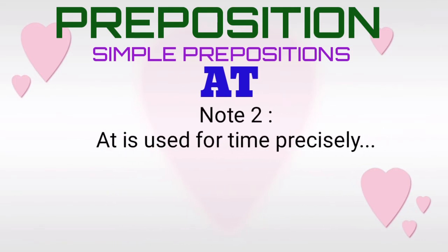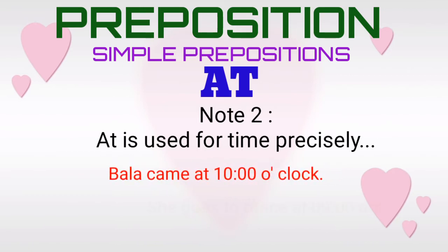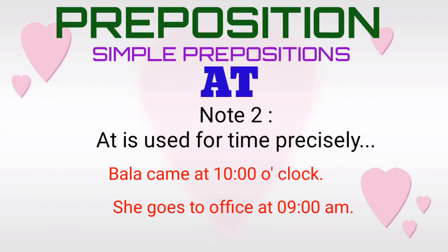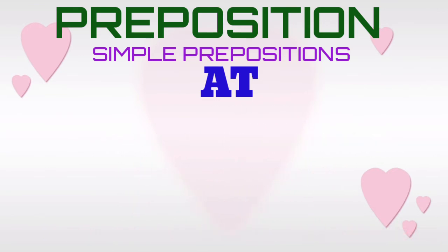Note two. The simple preposition 'at' is used for time precisely. For example: 'Bala came at 10 o'clock.' 'She goes to office at 9 a.m.' 'The movie starts at 6 p.m. and ends at 8 p.m.' Here the simple preposition 'at' is used for time precisely.